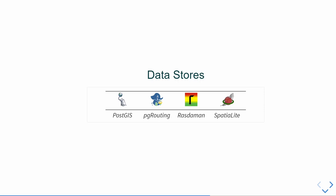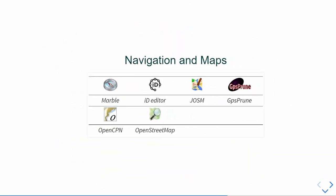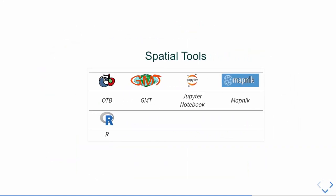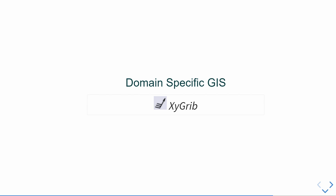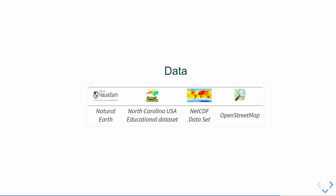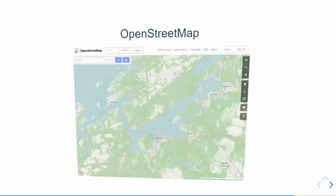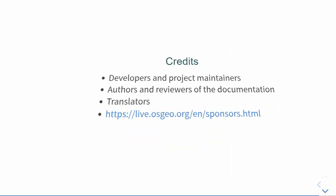We have a data store section with PostGIS and pgRouting for databases and navigation. The navigation and maps section includes OpenStreetMap data and connected tools. We have spatial libraries, many Jupyter notebooks you can try, domain-specific GIS software, pre-loaded sample datasets used by the quickstarts, and geospatial libraries.